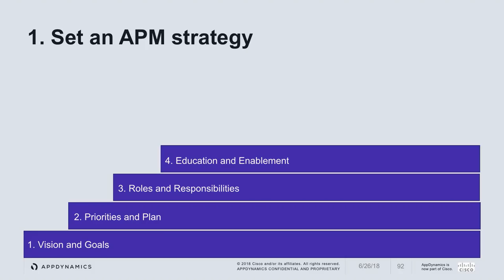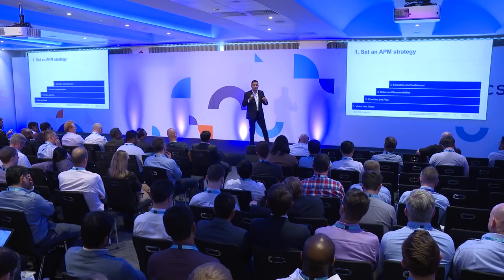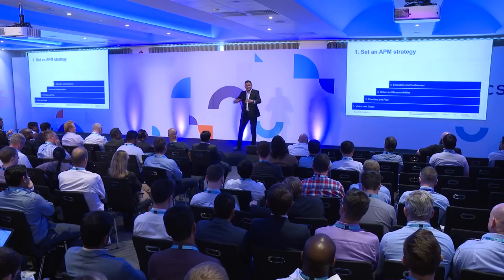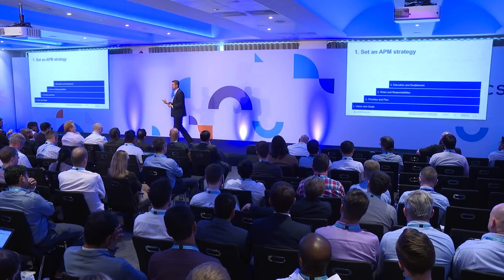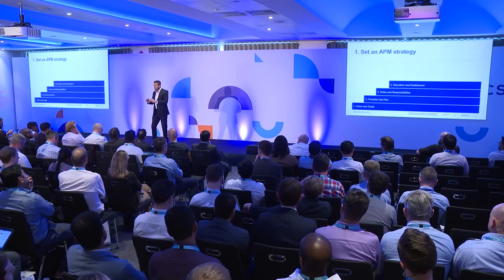After priorities, you assign responsibilities — who is going to do what? You decide roles: who's responsible for platform administration, for agent rollout, for connecting business value with APM. Do you need training? Do you need someone to lead this? We call that person the AppDynamics champion. Who's going to lead that movement in your organization? Roles and responsibilities are the third step.